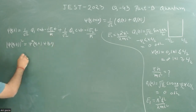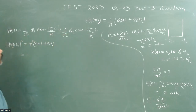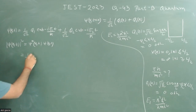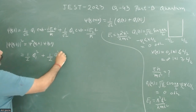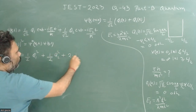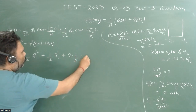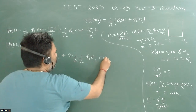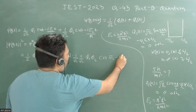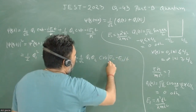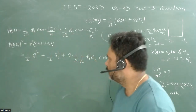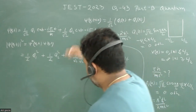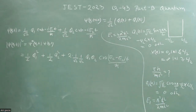Since φ1 and φ2 are both real functions, the calculation is straightforward. We get |ψ(x,t)|² = (1/2)φ1² + (1/2)φ2² + 2·(1/√2)·(1/√2)·φ1·φ2·cos[(E2 − E1)t/ℏ]. We have done this type of calculation many times in class.